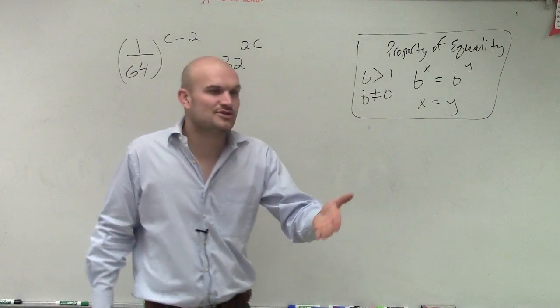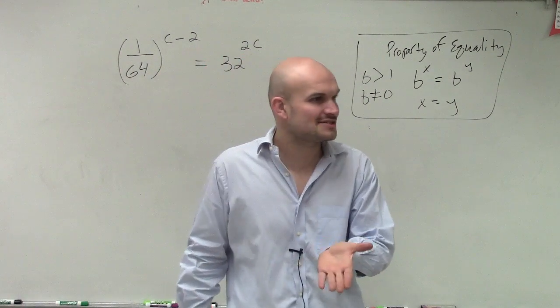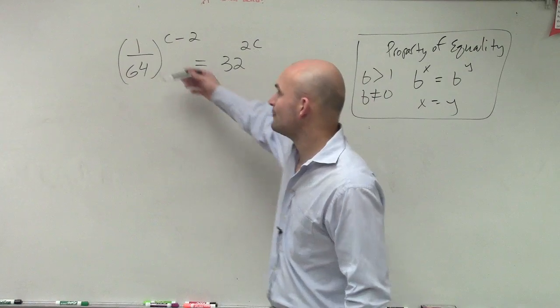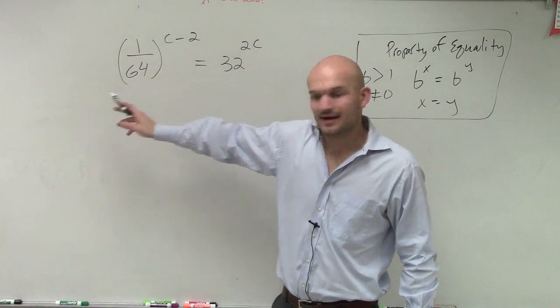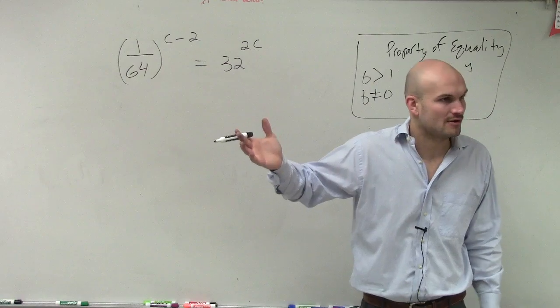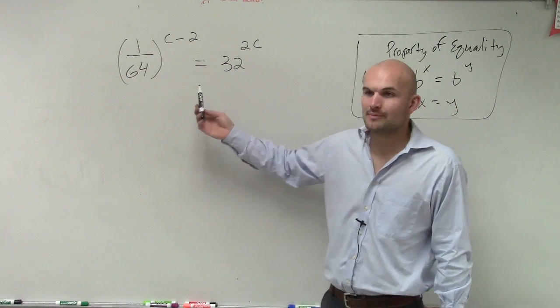But it's not as easy as 2 and 8, where you can rewrite 8 as 2 cubed. This one has 1 over 64 and 32. They don't look like they're even close to being the same power, right? And then you have a problem.